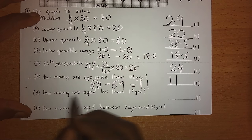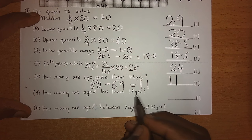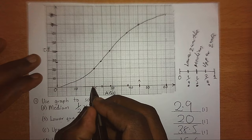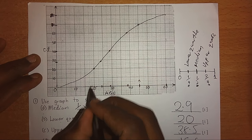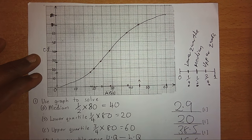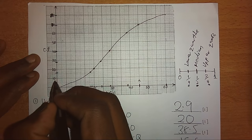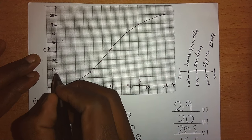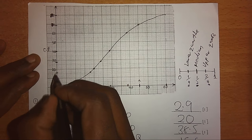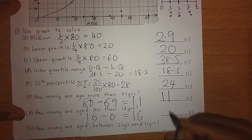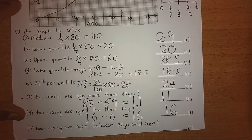How many are aged less than 18 years? We go to 18 on the horizontal axis, go up to the curve, and read the cumulative frequency. Reading the value — counting from 10 upward: 11, 12, 13, 14, 16 — we get 16. So there are 16 people who are aged less than 18 years.